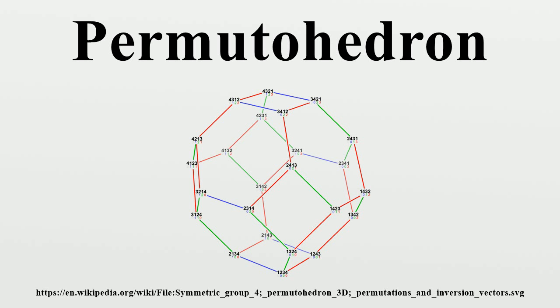Tessellation of the space. The permutohedron of order n lies entirely in the (n-1)-dimensional hyperplane consisting of all points whose coordinates sum to the number 1 + 2 + ... + n equals n(n+1)/2. Moreover, this hyperplane can be tiled by infinitely many translated copies of the permutohedron.